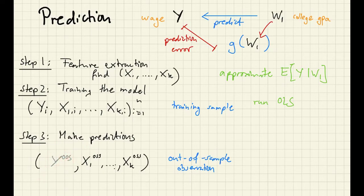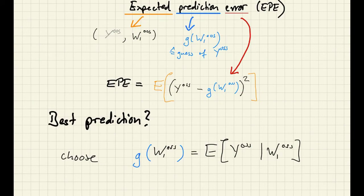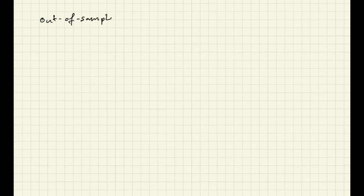In this video we are going to discuss prediction error and in particular the expected prediction error. We have an out of sample observation w1 for which we want to predict the corresponding y using the information contained in w out of sample. The best prediction we can make is